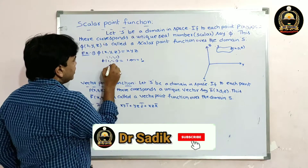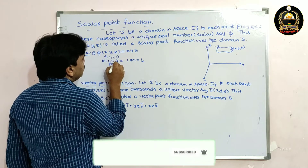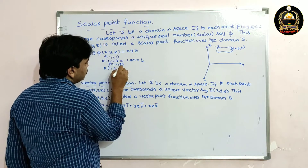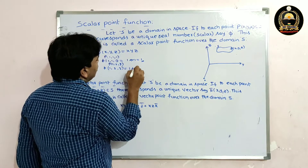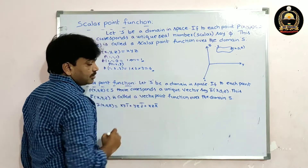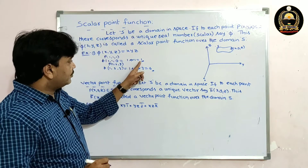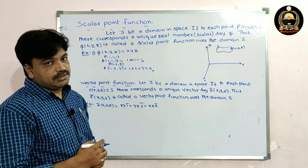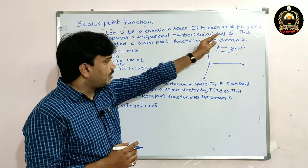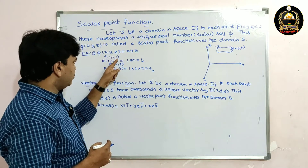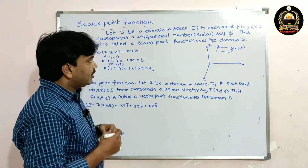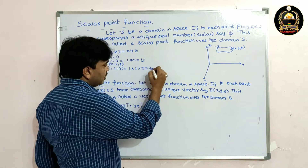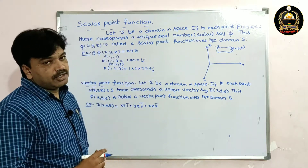If I take the point P = (1, 2, 3), then φ(1, 2, 3) = 1 × 2 × 3 = six. So to each point — whether (1,1,1) or (1,2,3) — there corresponds a unique real number.